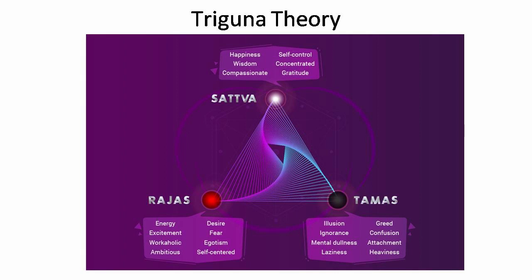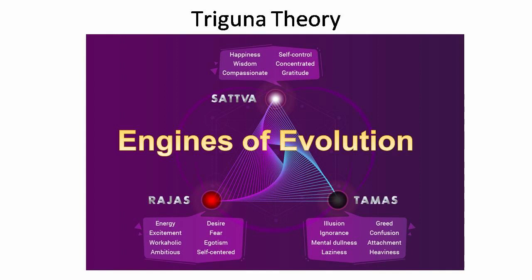Suddenly I remembered the alternate words used for Sattva, Raja and Tama — Kalyanausha, Roshavusha and Mohavusha. And now I visualize Sattva, Raja and Tama as engines of evolution. So from the cultural shock to understanding Sattva, Raja, Tama as engines of evolution was my journey in this whole career.